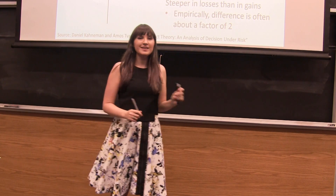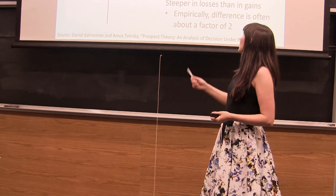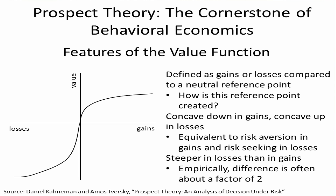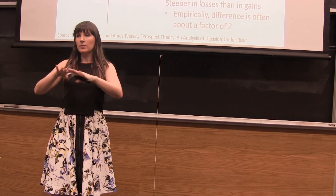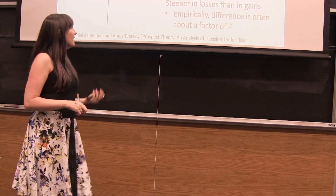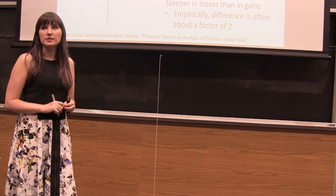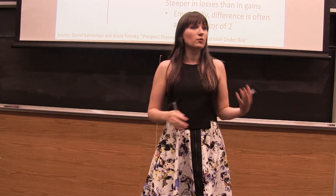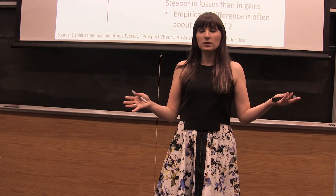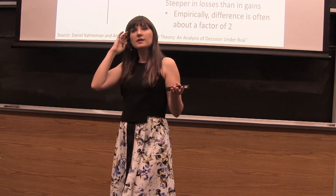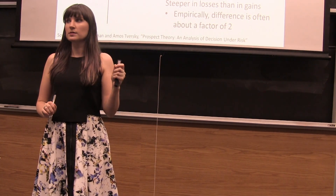So we have some key features of this value function. We're looking at things in terms of gains and losses compared to where we feel our psychological status quo — our psychological neutral point — is. We've gotten acclimated to where we are, we consider this our baseline, and then we're comparing gains and losses against that baseline. We're not sure exactly how this reference point is created, and it could be created in different ways in different circumstances. It could potentially be manipulated, so it's worth talking about further. But nonetheless, we seem to have some sort of neutral point that we're judging gains and losses against.